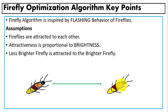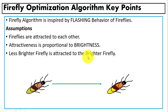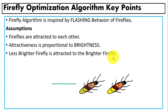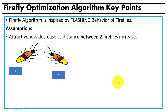The first assumption is that fireflies are attracted toward each other. To represent attractiveness between two fireflies, we compute a brightness value for each firefly. Attractiveness is proportional to brightness — a less bright firefly is attracted toward the brightest firefly.